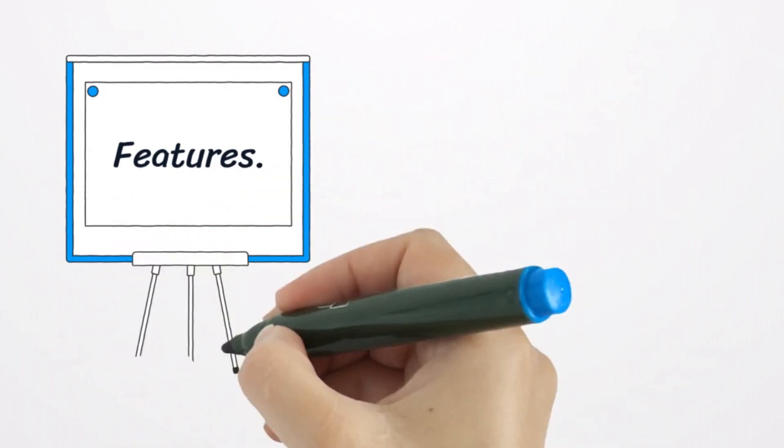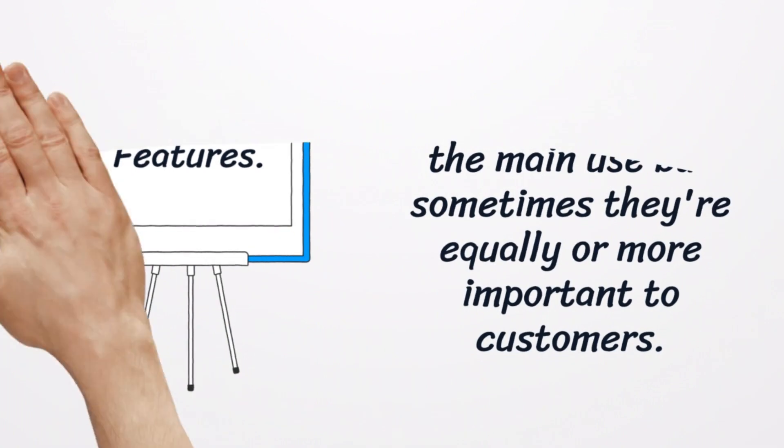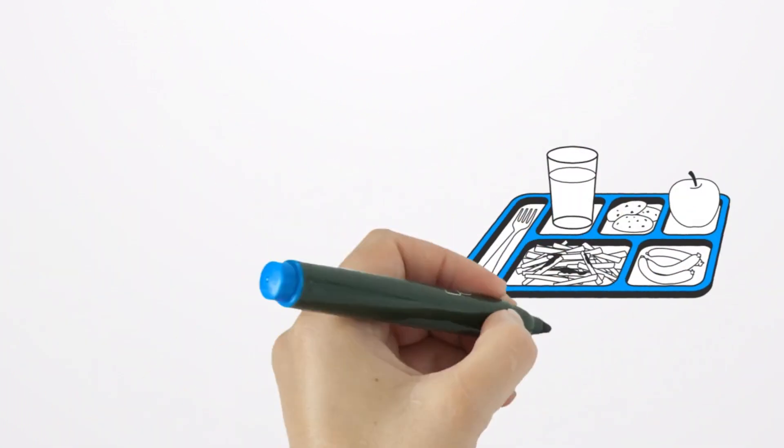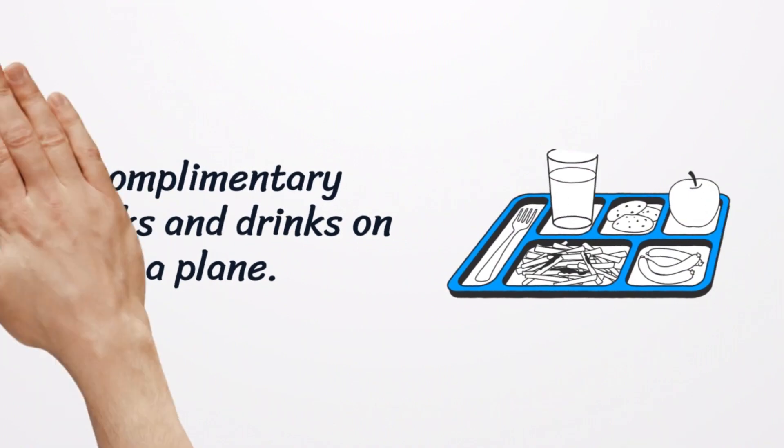Second dimension is features. These are the bells and whistles of products and services. They're secondary to the main use but sometimes they're equally or more important to customers. Example: complementary snacks and drinks on a plane.